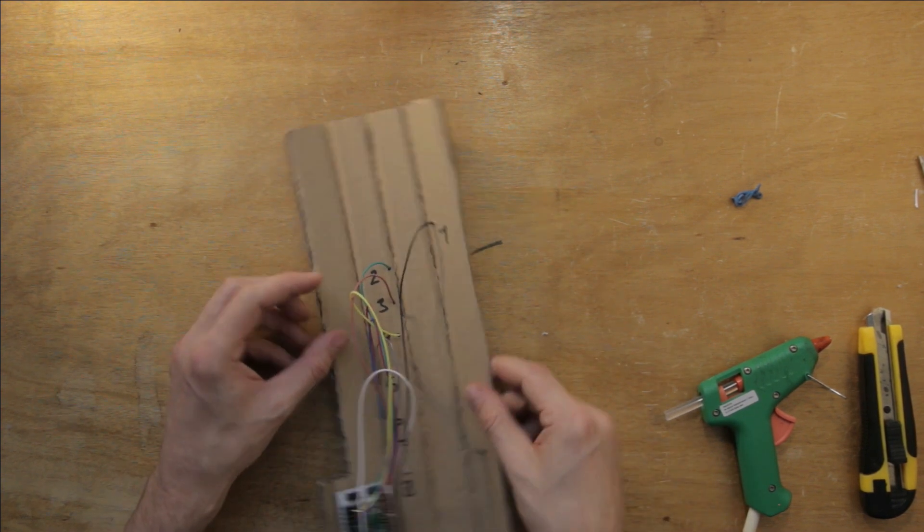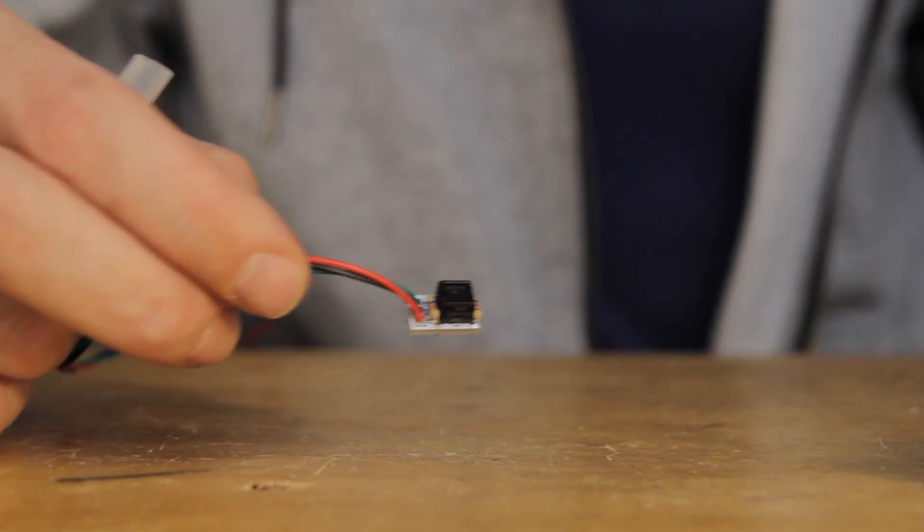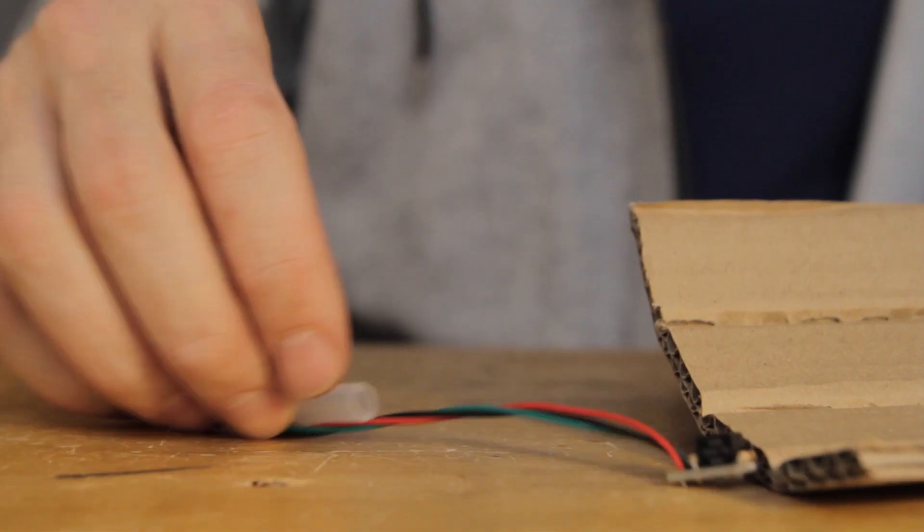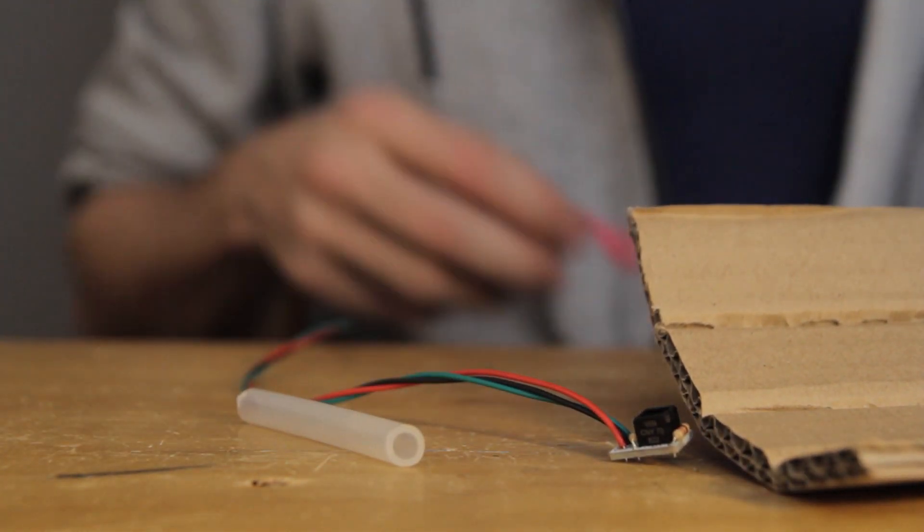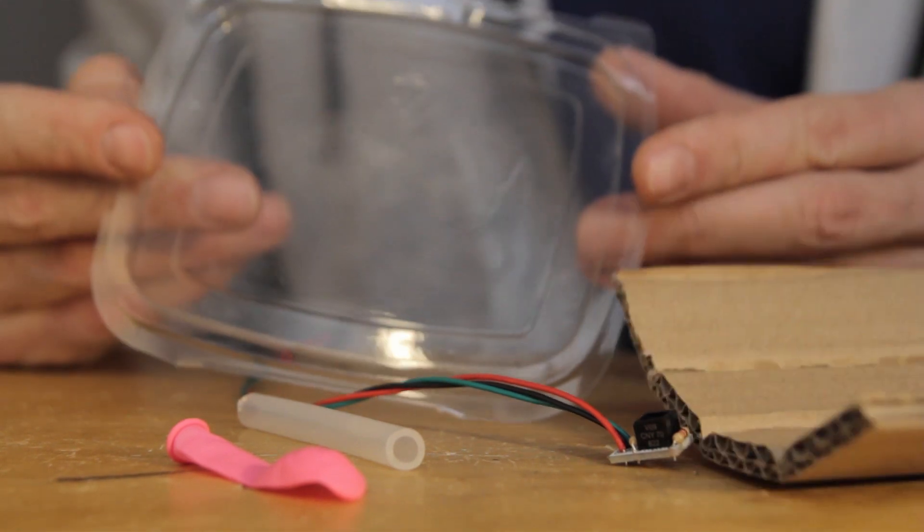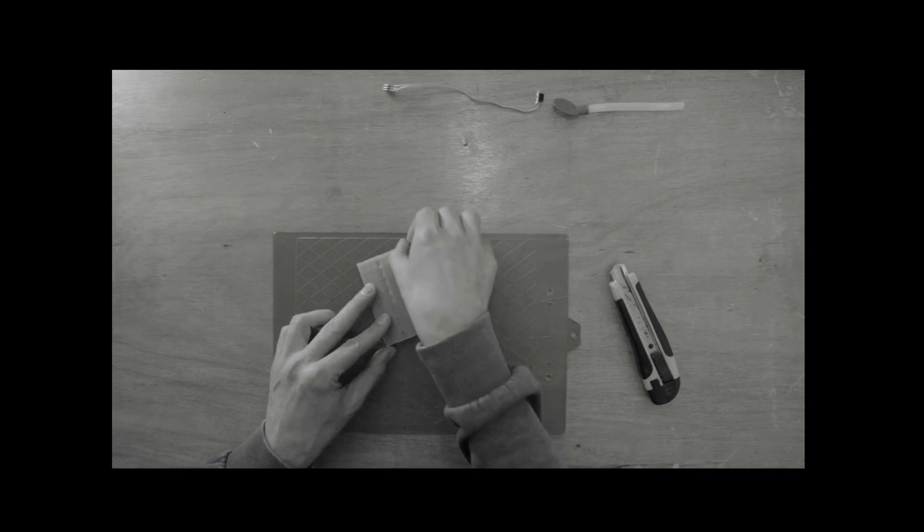Now we need to put together the breath sensor. So for this simple wind instrument, I'm also going to make a super simple breath sensor. I'll need one of my CNY70 sensor modules, a food grade silicone tube, and a water balloon. I'll also need a small piece of food grade plastic, which I'll cut out of this lid from a food container.